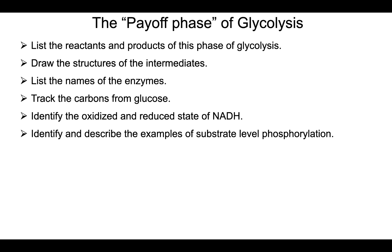By the end of this video, make sure you can go back and watch it several times to be able to do the following: list the reactants and products of this phase of glycolysis, draw and name the structures of the intermediates, list the names of all the enzymes, track the carbons from glucose, identify the oxidized versus reduced state of NADH, and finally identify and describe examples of substrate-level phosphorylation.